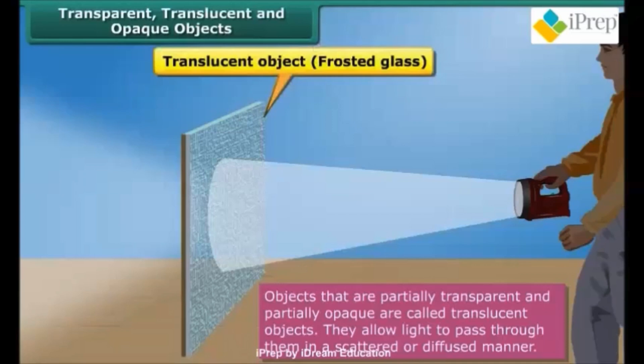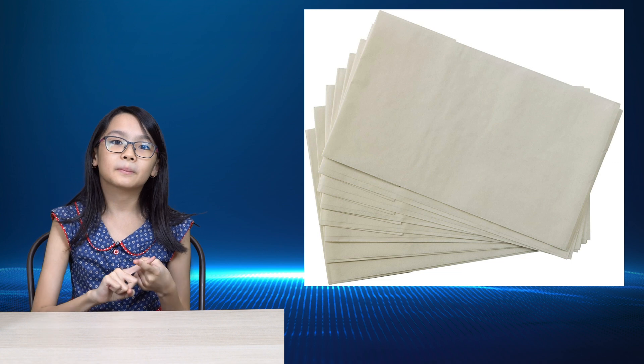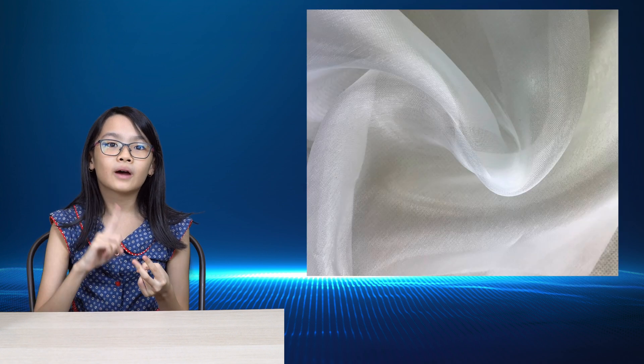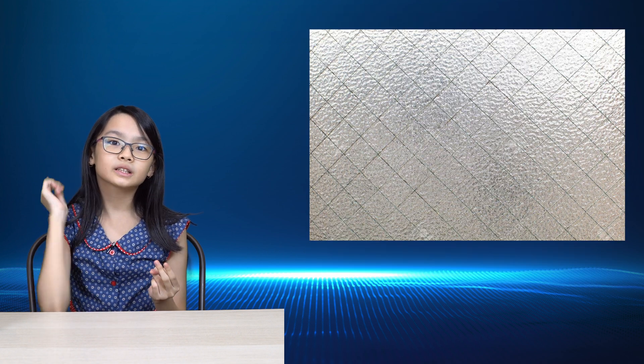And the last one is translucent objects. What is a translucent object? Translucent objects are objects that allow only some light to pass through, such as tracing paper, thin fabrics, frosted glass, frosted mug, and many more.